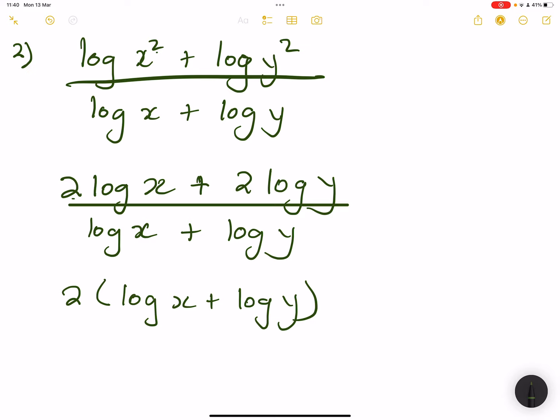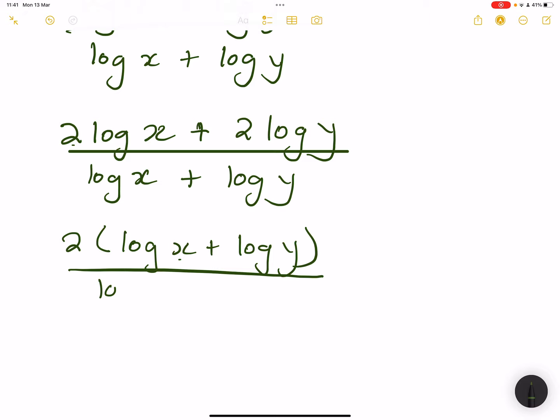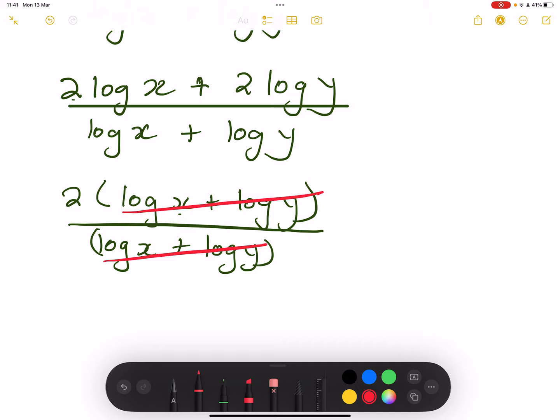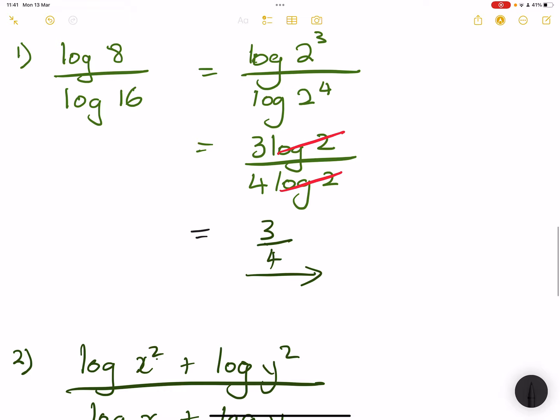Nothing stops you from writing this as log(xy) using our first rule of logs. So this will be divided by log x plus log y. You notice that this is exactly the same as what we have there, so we can simply cancel those two. And 2 divided by 1 gives us 2 as our final answer.